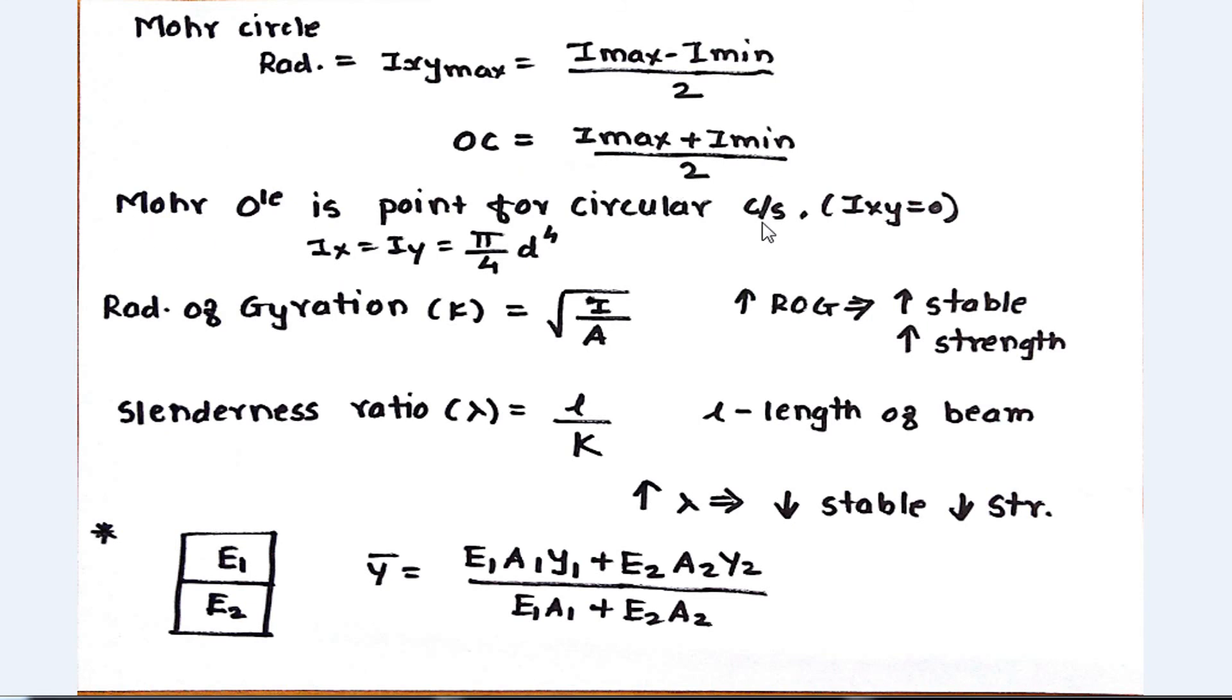Here, Mohr circle is a point for circular cross-section because, as I said earlier, for circular cross-section the axis is symmetrical, so Ixy is zero. So the Mohr circle is a point for circular cross-section, and Ix and Iy equal pi by 4 times d raised to four. Next is radius of gyration.